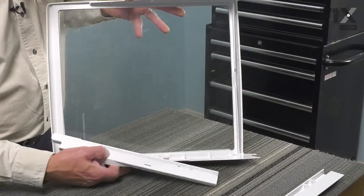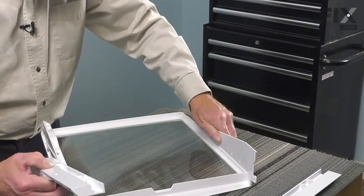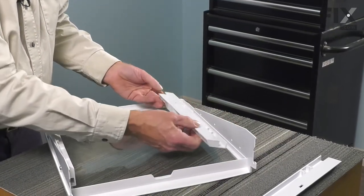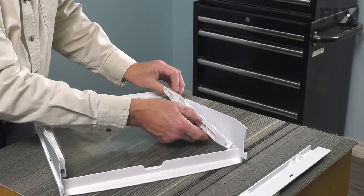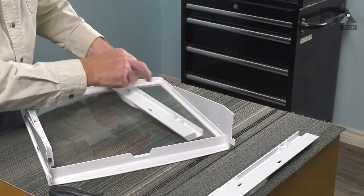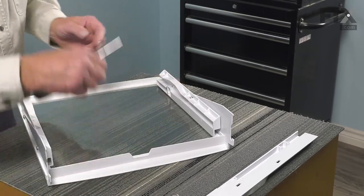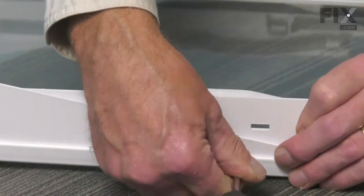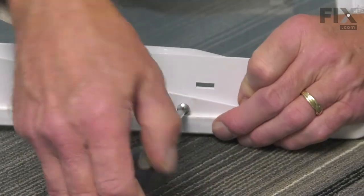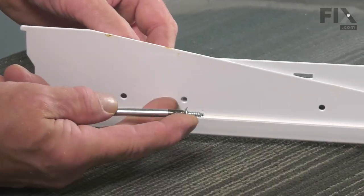Now, to line up the new one, we're just going to lay this face down. We'll position that glide. The second hole in on the glide lines up with the front hole in the mounting bracket. That should also line up the mounting hole on the second one in from the back of the shelf.